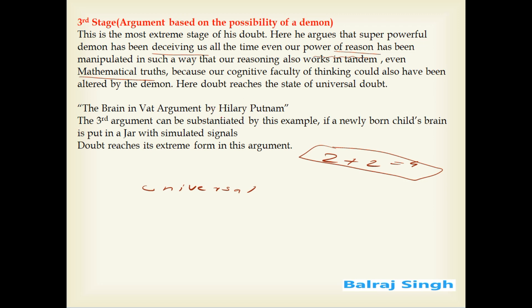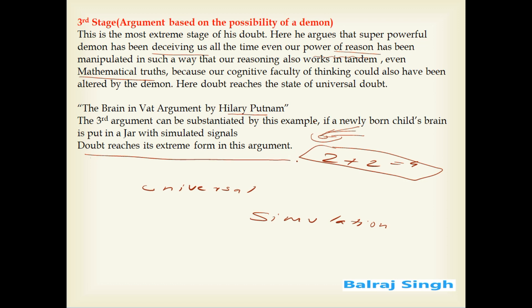To substantiate this, an example was given by Hilary Putnam. He said that if a newly born child did not survive and we had to put its brain in a jar, and we kept supplying signals to the brain through a computer, giving all manner of simulations, then the brain would think it is witnessing all the phenomena of the world — but actually nothing is happening; these are only simulations the brain is receiving. In this state we see that doubt has reached its extreme form. This was the explanation of Descartes' method of doubt.